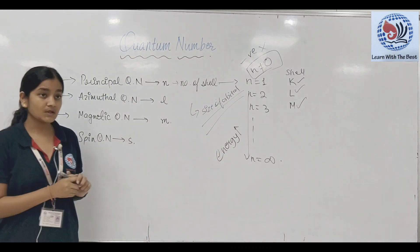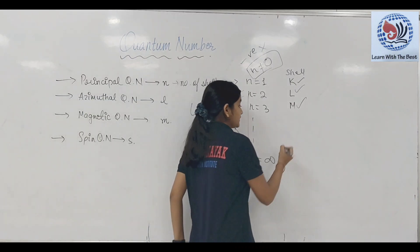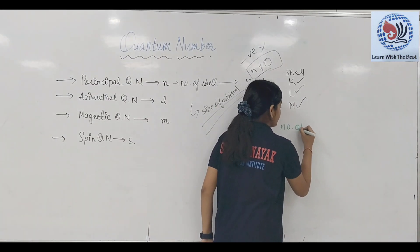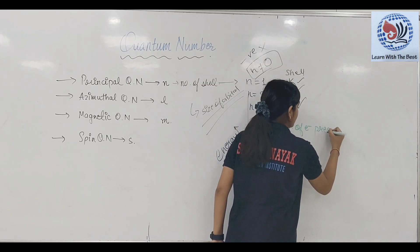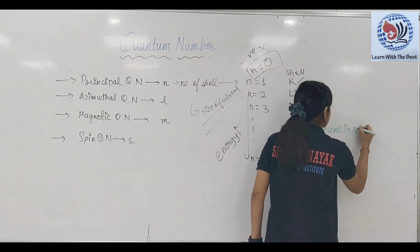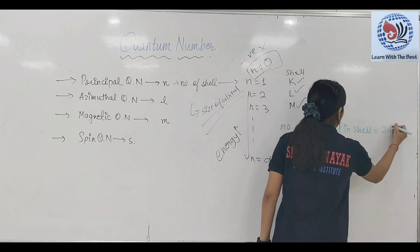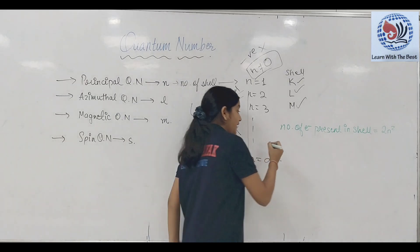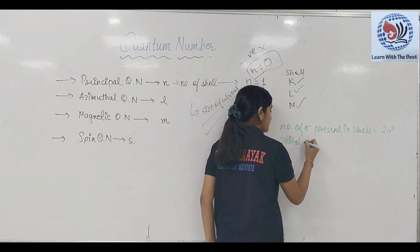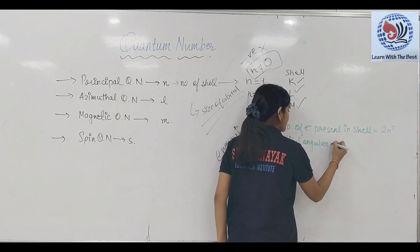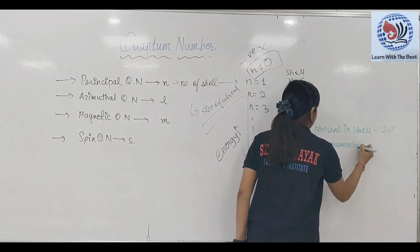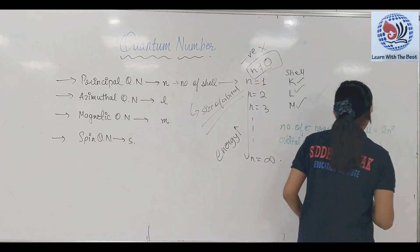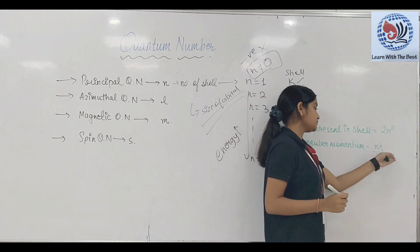यह है principal quantum number। अगर हमें number of electrons present in a shell find out करना है, तो इसे हम 2n² से define करते हैं। और अगर हमें electron का orbital angular momentum निकालना है और n की value दी हुई है, तो हम इसे nh/2π से find out कर सकते हैं, जहाँ n है number of shells और h है Planck's constant।